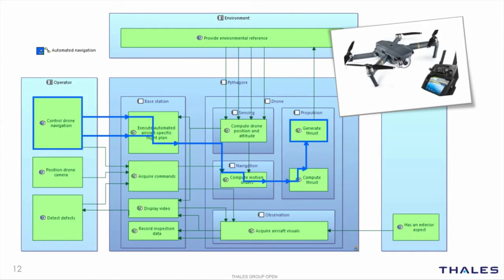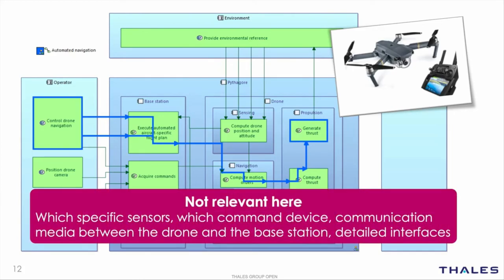If the execution of the flight plan is performed within the drone, then more computing resources will be required with an impact on battery life and therefore on autonomy. The goal of this level of description is to give all stakeholders the same basic understanding of the solution: engineering managers, marketing staff, product line managers, design authorities and safety analysts. What is not relevant here is which specific sensors, command devices, or communication media between the drone and the base station we are going to use, nor the detailed interfaces.